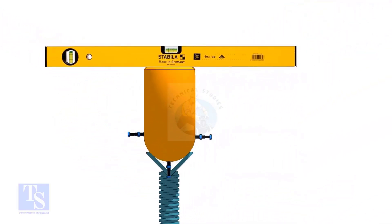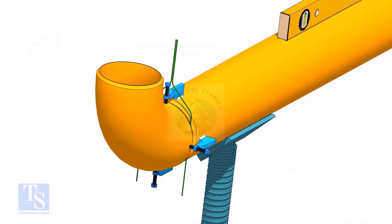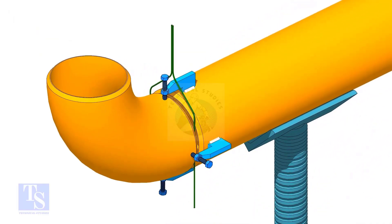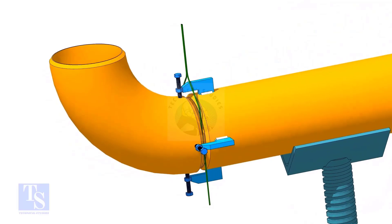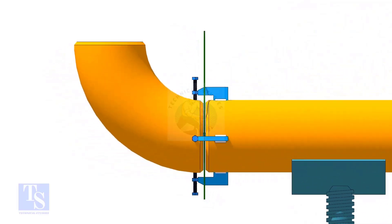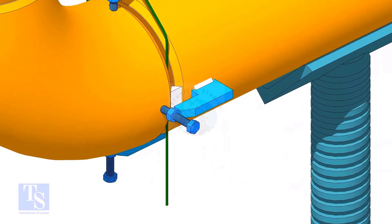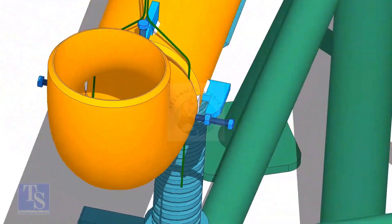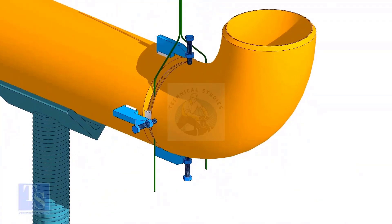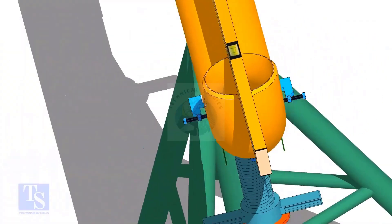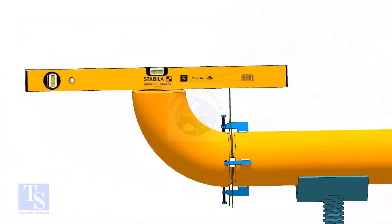You may need to level the elbow face as shown. Tack weld in the joint sides and check the level of the elbow.